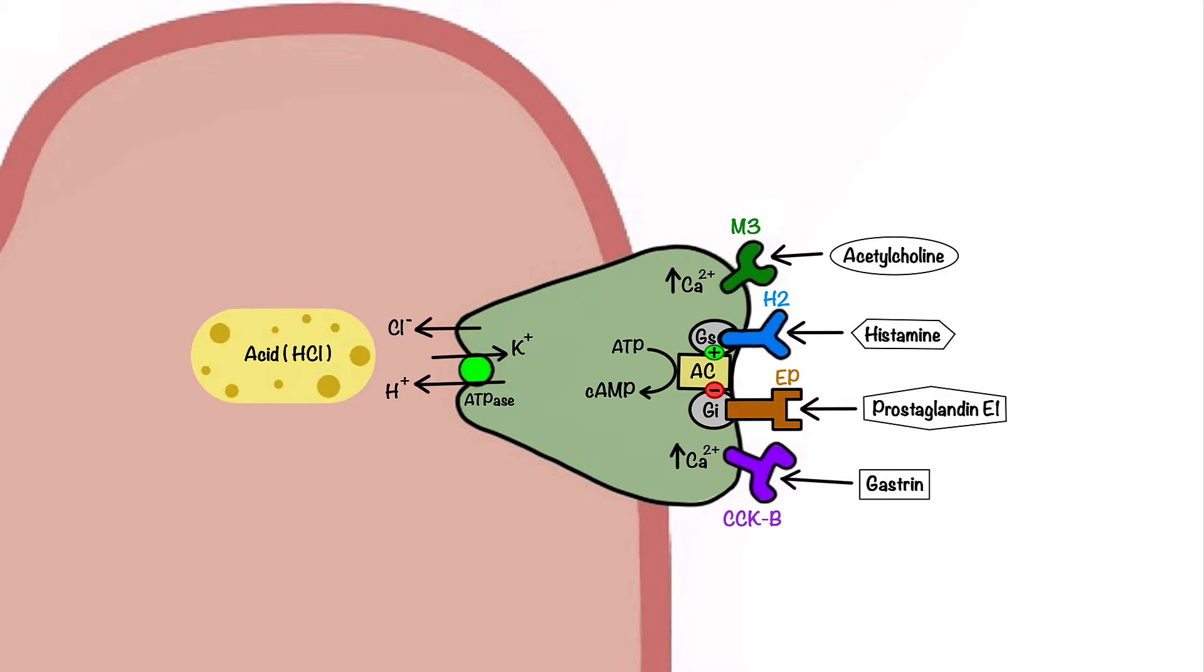Misoprostol is a synthetic prostaglandin E1 analog that stimulates prostaglandin receptors on parietal cells to decrease intracellular cAMP levels, thus leading to decreased activity of hydrogen-potassium ATPase.